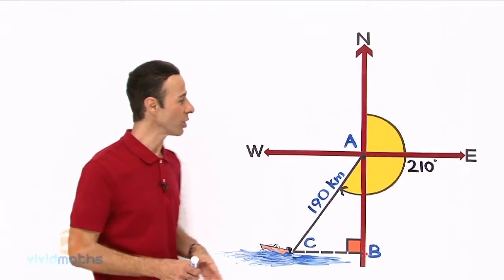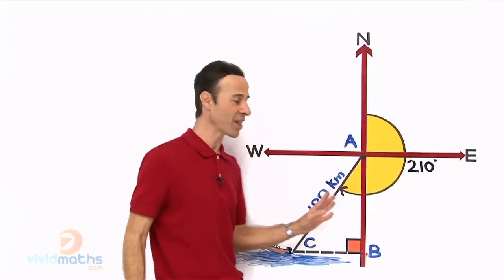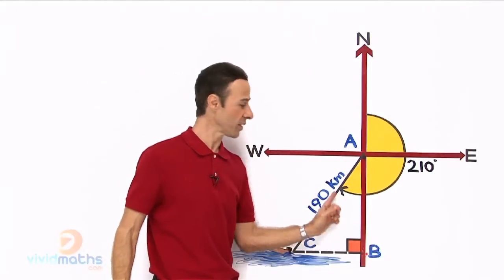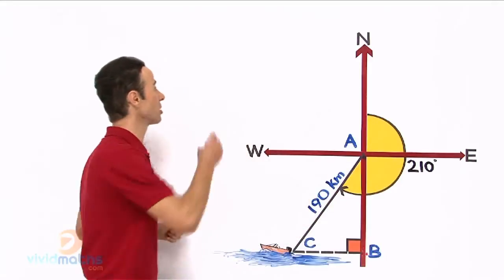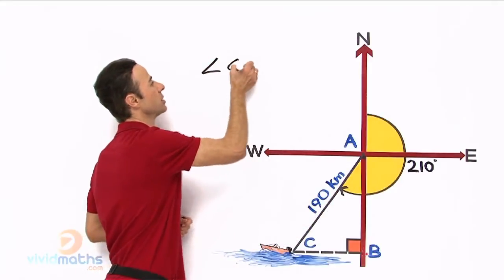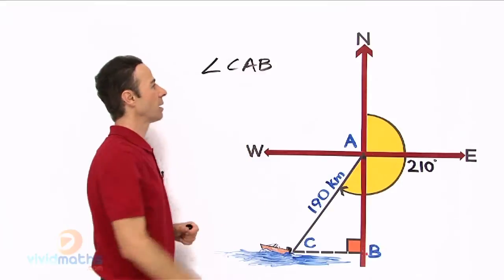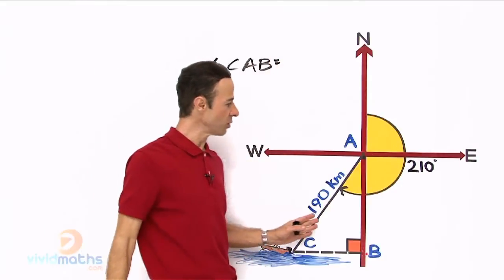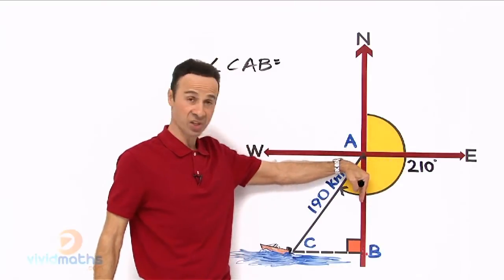And that is to work out what this angle here is. Now that angle I would call it CAB. That is the angle in there. Let us work out CAB. So angle CAB equals, now let us have a look here.